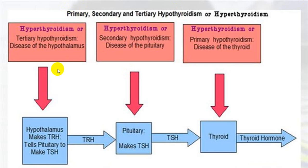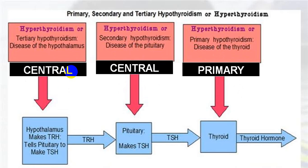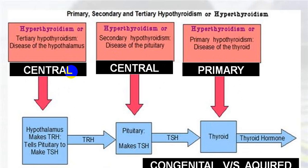Regarding anatomical site: primary refers to thyroid gland disorders; secondary to pituitary gland disorders; tertiary to hypothalamic disorders — pituitary and hypothalamic together now called central. Congenital if present from birth; acquired if due to surgery, radiation, traumatic injury, or vascular causes. Symptom-wise: subclinical and clinical, where clinical is also called overt.